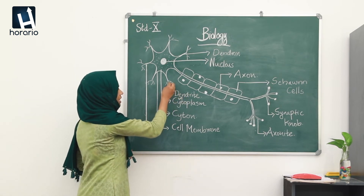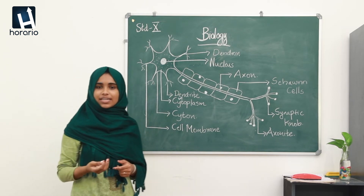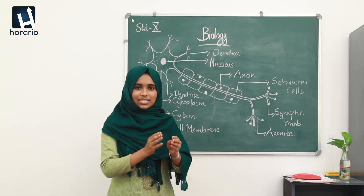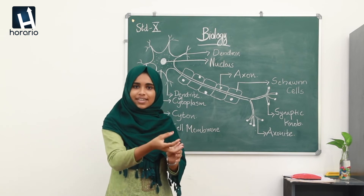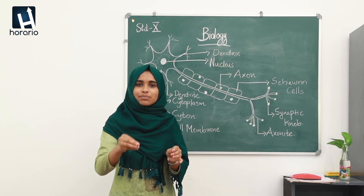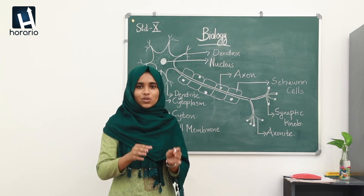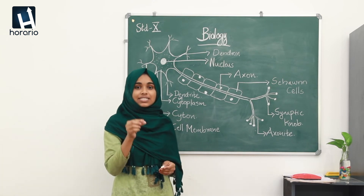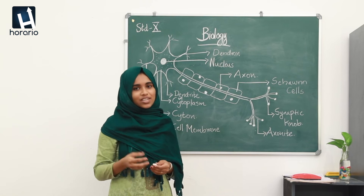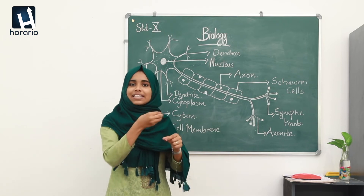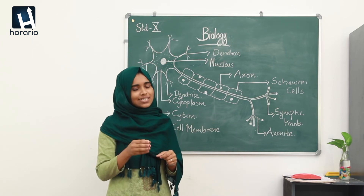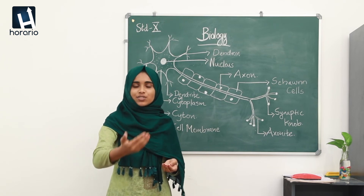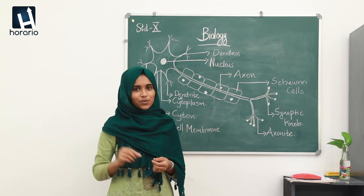The first part is the dendrite, which is the branch of the dendron. The function of the dendrite is to receive impulses and transmit them to the next part, which is the dendron. The dendron is the shortest filament arising from the cytone, and it passes the impulses to the cytone, which then passes them to the axon.